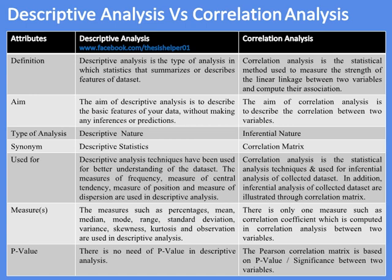The measures used in descriptive analysis include percentages, mean, median, mode, range, standard deviation, variance, skewness, kurtosis, and observation. While in correlation analysis, there is only one measure — the correlation coefficient — which is computed between two variables.